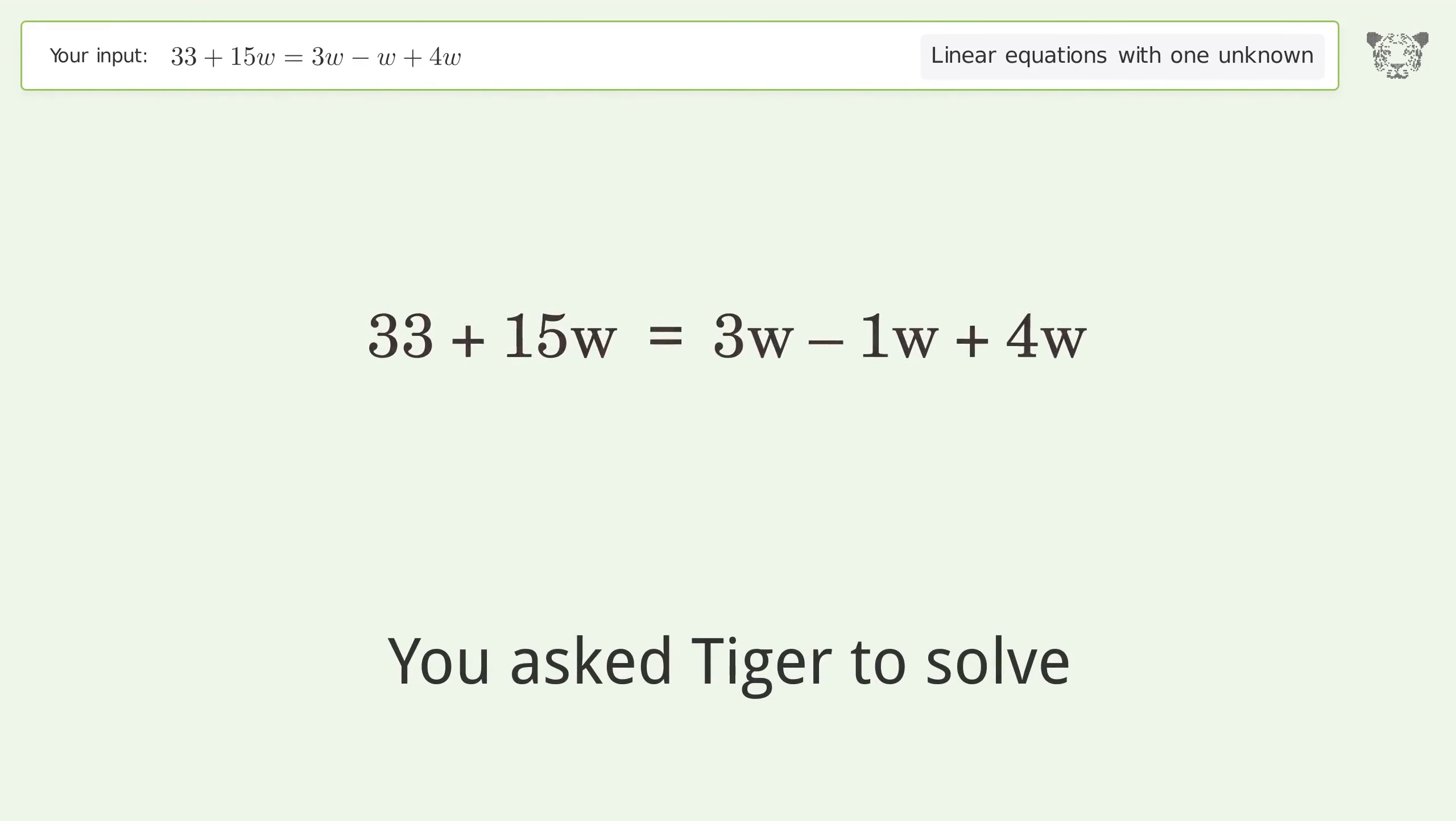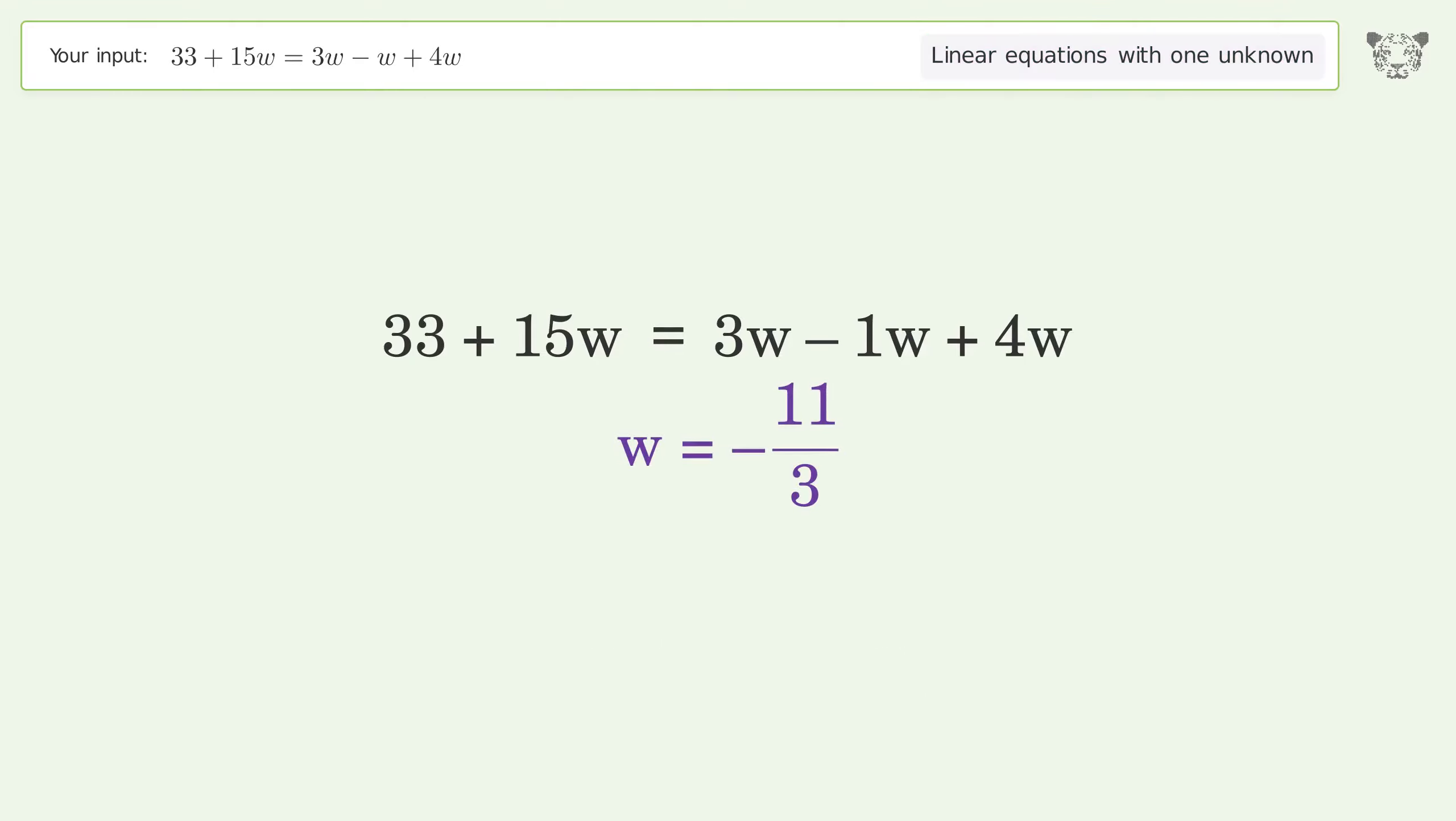You ask Tiger to solve this. It deals with linear equations with one unknown. The final result is w equals negative 11 over 3.